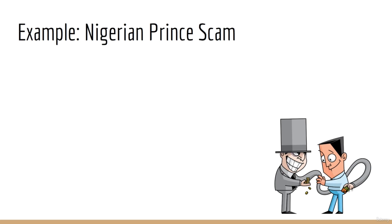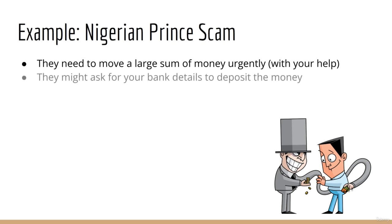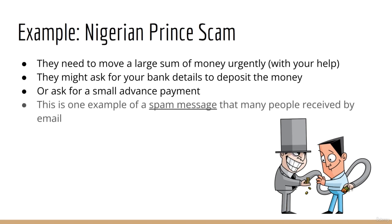One classic scam is called the Nigerian prince scam, where the sender pretends to be a Nigerian prince. They tell you they have a large sum of money which they need to move urgently out of their country, and for some reason they need your help. They might ask for your bank details so that they can deposit their money into your bank account, or they might ask you for a small advance payment. In exchange for your help, they will offer to let you keep a small part of their fortune. Of course there is no money to be made because none exists, since it is a scam. These are messages that you receive but do not want — typically from people who are trying to scam you or get something from you.